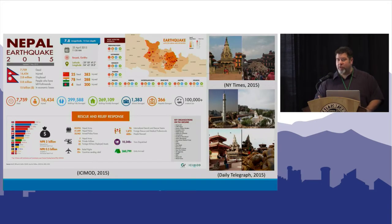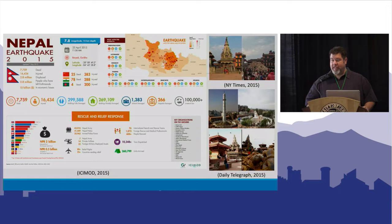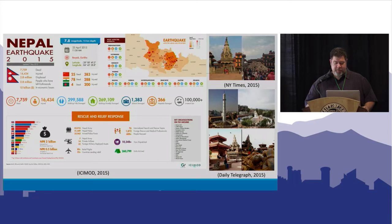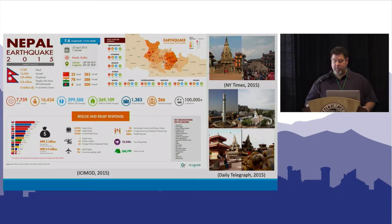A quick background: the Nepal earthquake hit in April of 2015. There were around 8,000 reported dead and widespread damage across the country. In addition to Kathmandu, many of the rural outlying areas were affected. A huge relief effort came in immediately from around the world — both international NGOs, relief agencies, and government responses. The situation was exacerbated by the fact that Nepal had been in a constitutional crisis the previous year, so their government was not in a state to be able to respond effectively.